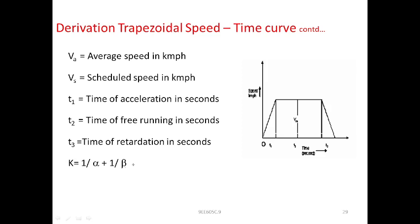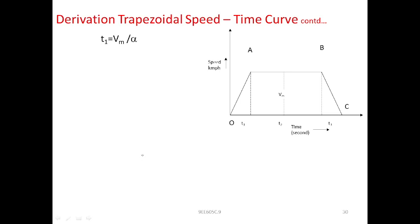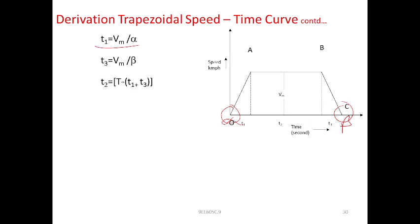From the trapezoidal curve geometry, T1 is equal to Vm divided by α, where α is the acceleration and β is the retardation. So T3 is equal to Vm divided by β. From these, T2 is equal to T minus T1 minus T3, which gives T2 = T minus (Vm/α) minus (Vm/β).